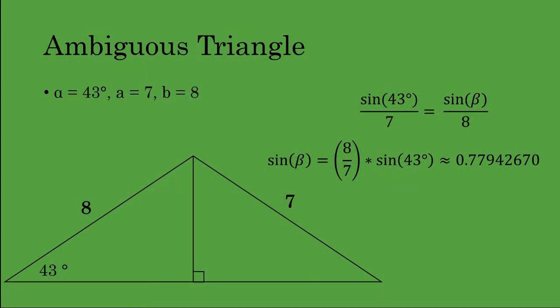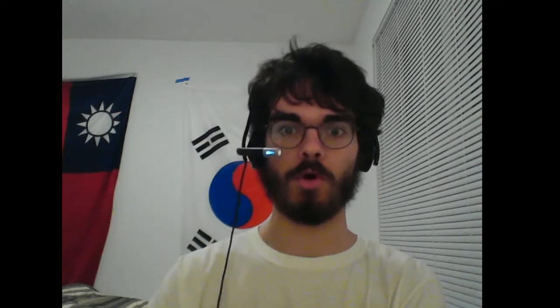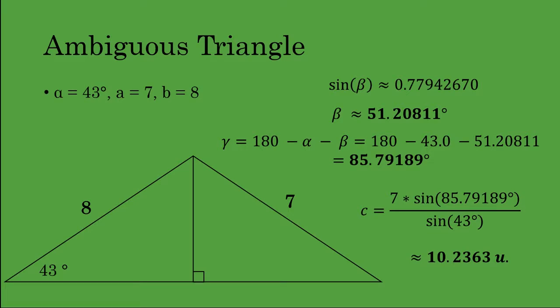We know the sine of beta, and if we were just following steps as if this weren't an ambiguous case, you would probably type this into your calculator and find the inverse sine of approximately 0.7794267. The calculator will give one and only one output. However, you need to be careful — especially in this ambiguous case. You know it's ambiguous because you did the calculation with B sine of alpha. So the value given for that arc sine is not the only value you're looking for; it's just one of them. That gives us the acute angle here: approximately 51.21 degrees.